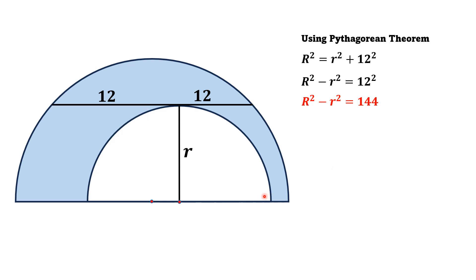Now the area of the shaded region is actually the area of the outer semicircle minus the area of the inner semicircle. We know that the area of a semicircle is half the area of a circle.